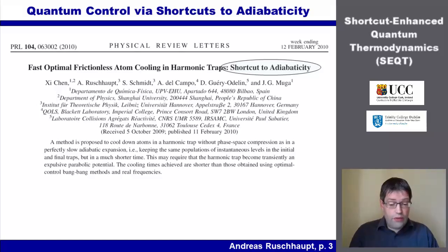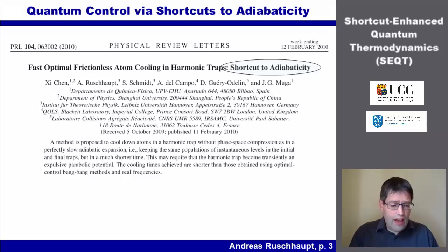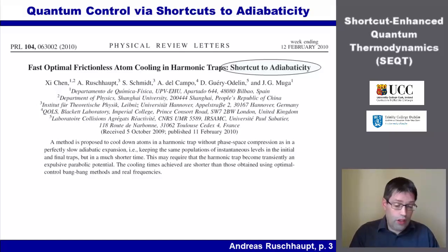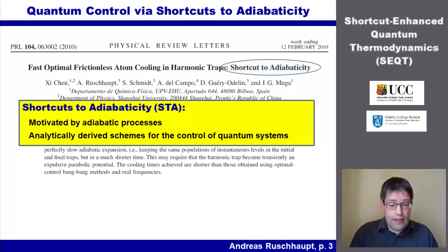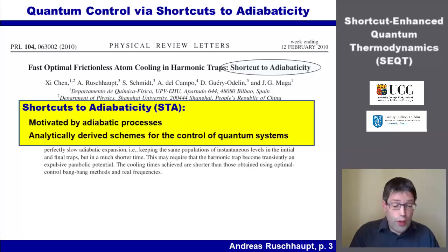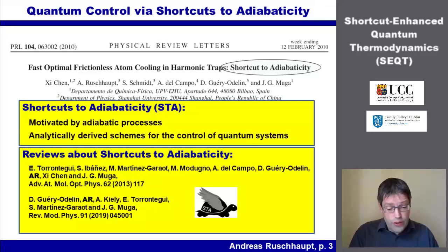One set of techniques for such quantum control are shortcuts to adiabaticity, or in short STA. Shortcuts to adiabaticity were introduced in 2010 in a paper by myself and colleagues. Since then the field has increased a lot and currently many international groups are working on them. Shortcuts to adiabaticity are motivated by adiabatic processes, and by using STA we can design analytically derived schemes for the control of quantum systems. Here you can see two reviews on shortcuts to adiabaticity.